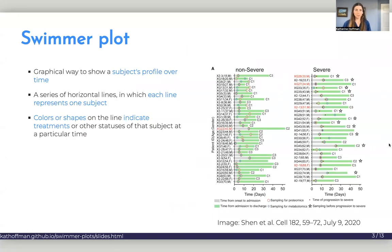So what is a swimmer plot? A swimmer plot is a graphical way to show a subject or patient's profile over time. It's comprised of a series of horizontal lines in which each line represents one subject, and the colors or shapes on the line usually indicate treatments or some other type of status at that subject at a particular time.